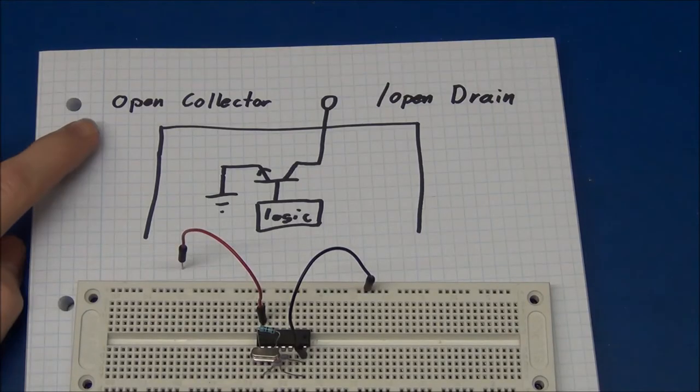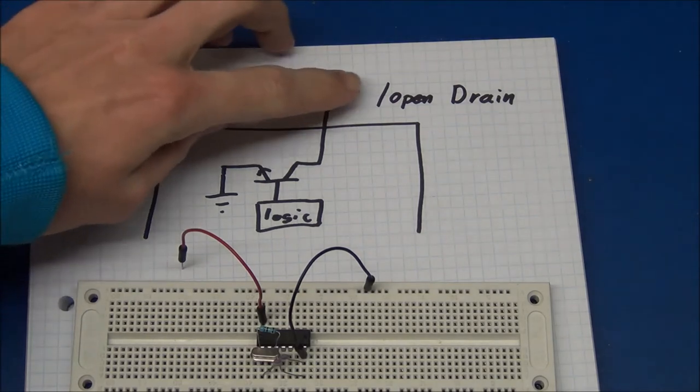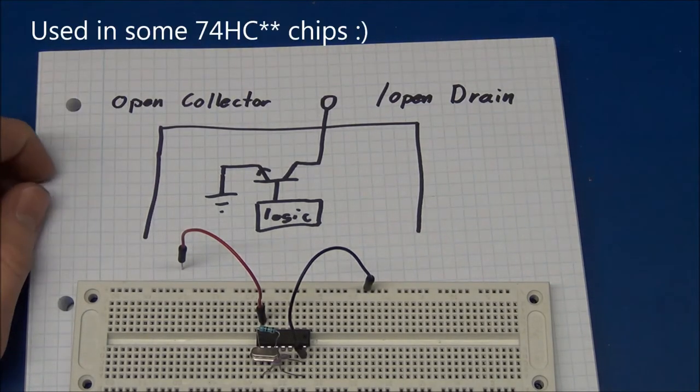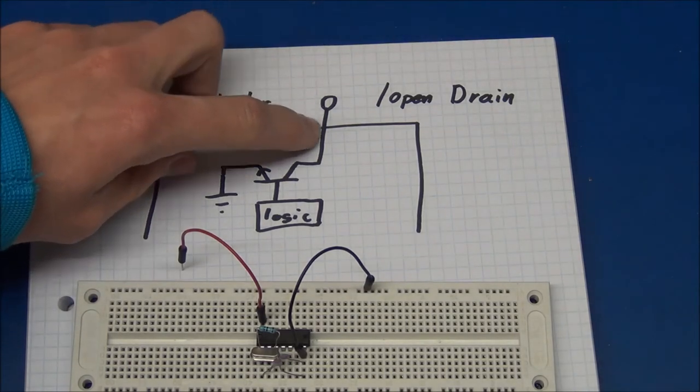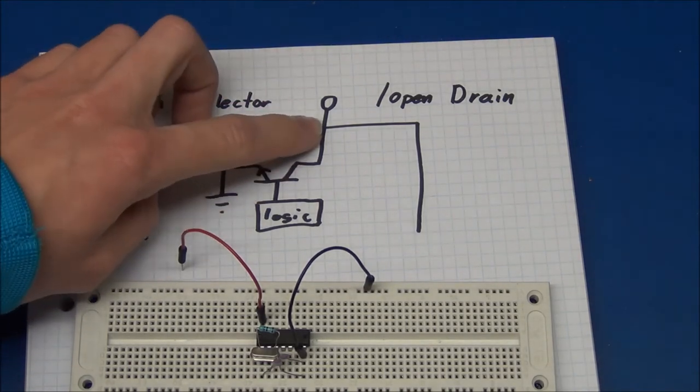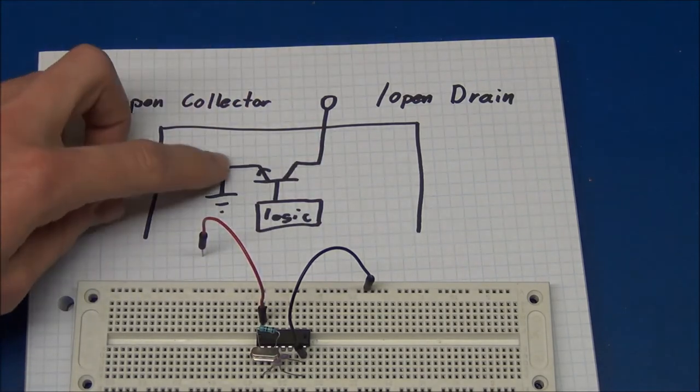And the second most common one will be the open collector or open drain output. And the difference from the push-pull output will be that this can only sink current, it means that there is no connection to VCC in here.